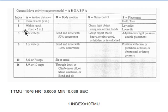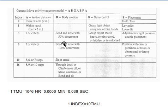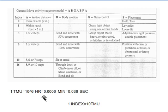If we choose index 1, action distance is within reach and we grasp a light object using one or two hands. If we select index 3, action distance requires one or two steps, body motion should be bend and arise with 50% occurrence, gain control involves grasping an object that is heavy, obstructed, hidden, or interlocked, and placement should be with light pressure. The TMU is nothing but time measurement unit. One TMU equals 10 raised to negative 6 hours, which equals 0.006 minutes, which equals 0.036 seconds. One index is equal to 10 TMU.